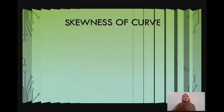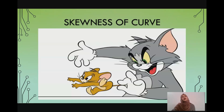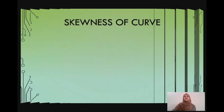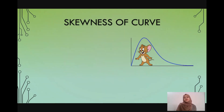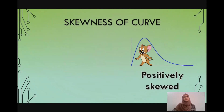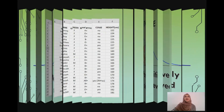Now we talk about skewness of a curve. We have a negatively skewed curve and a positively skewed curve — how do we tell which one is which? We'll take Tom and Jerry as an example and notice the direction of Jerry's tail. If we see a curve with a tail extending towards the right side or the positive quadrant, this would be a positively skewed curve. And if the curve tails towards the left side, that would be a negatively skewed curve.